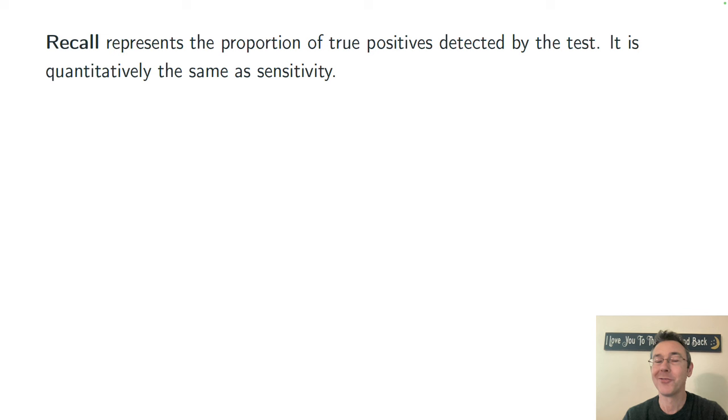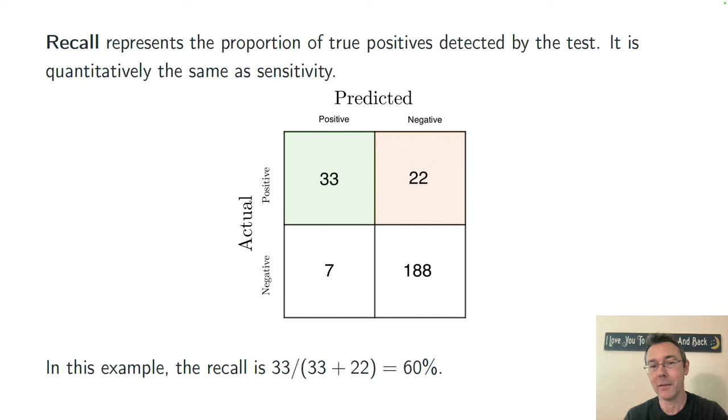Recall, on the other hand, is representing the proportion of true positives that are detected by the test. It's quantitatively the same as sensitivity. So I'm taking the true positives as a fraction of all the actual positives. So again, that's 60%.